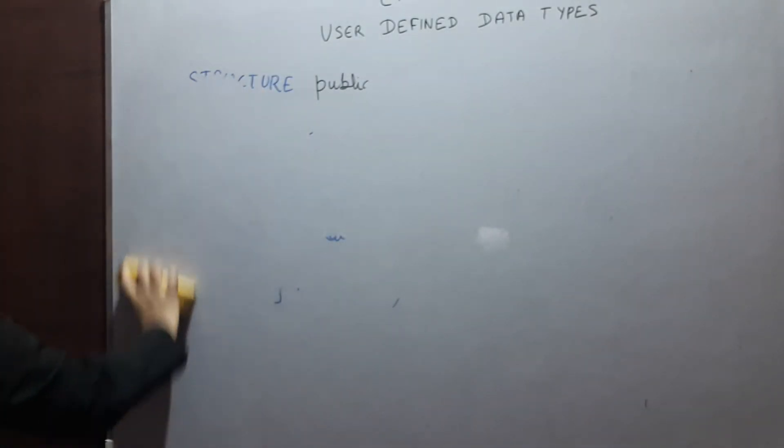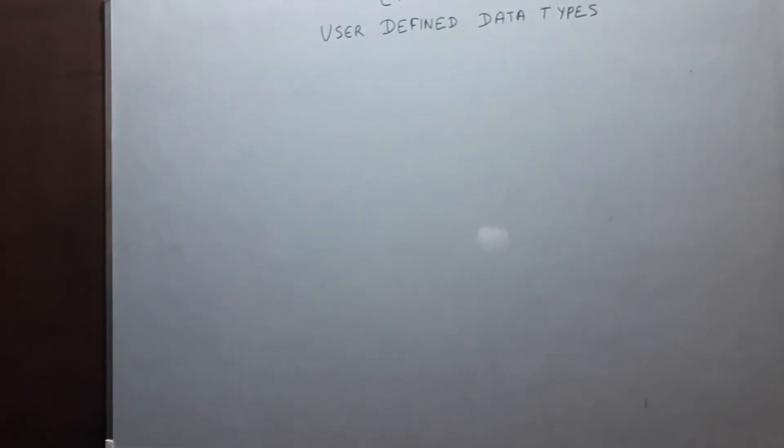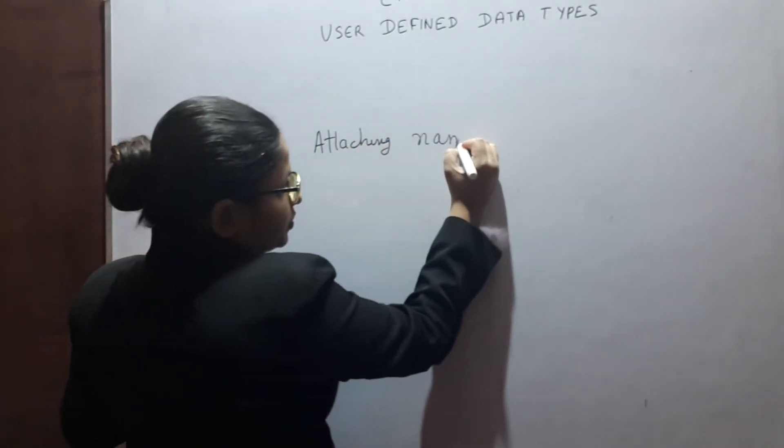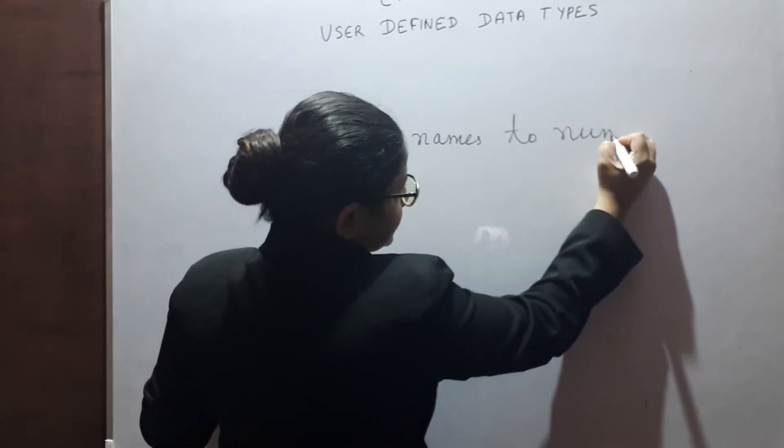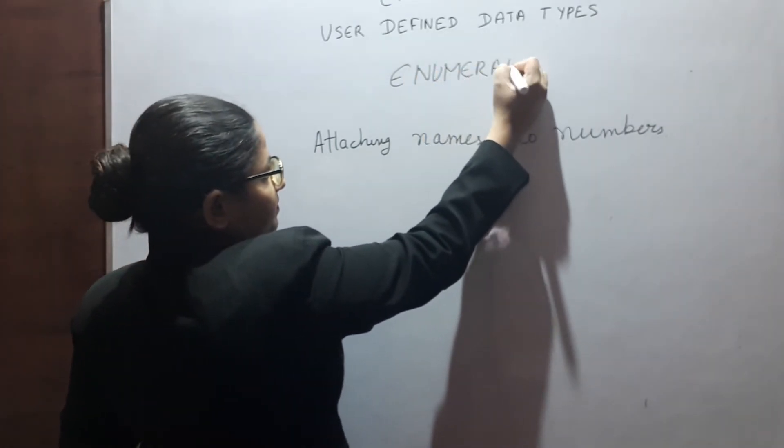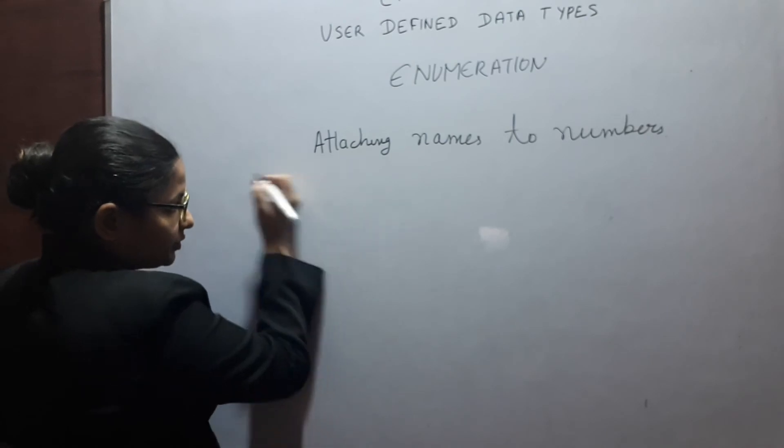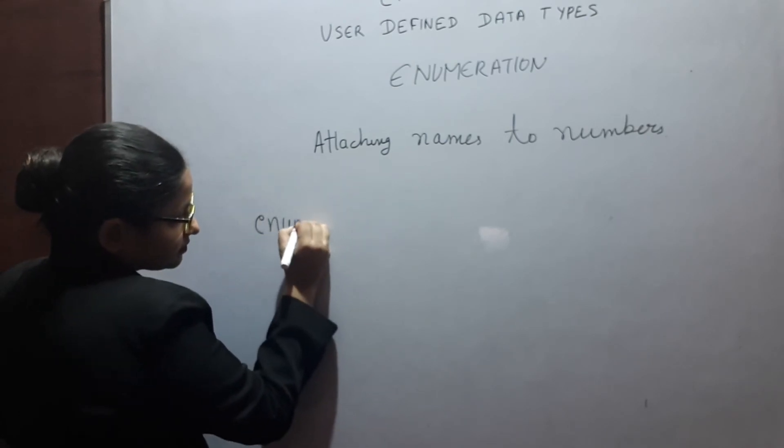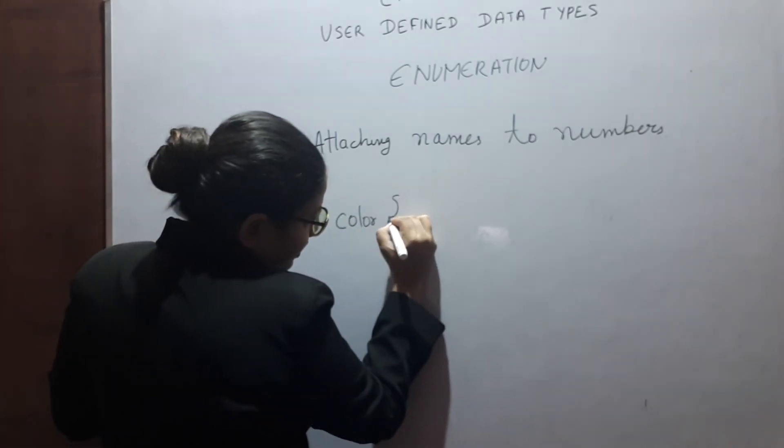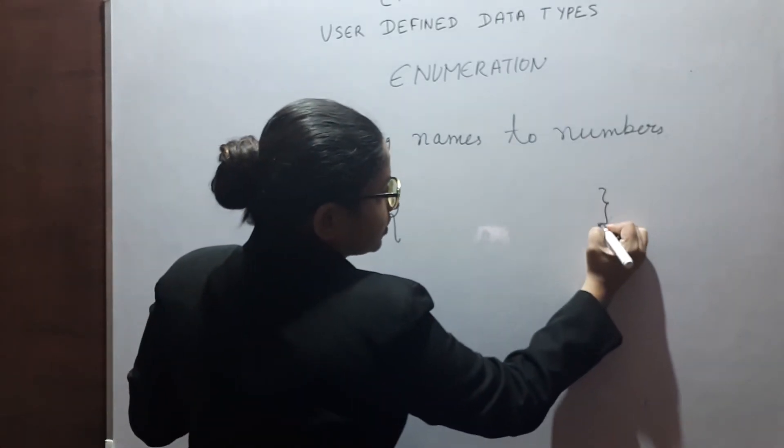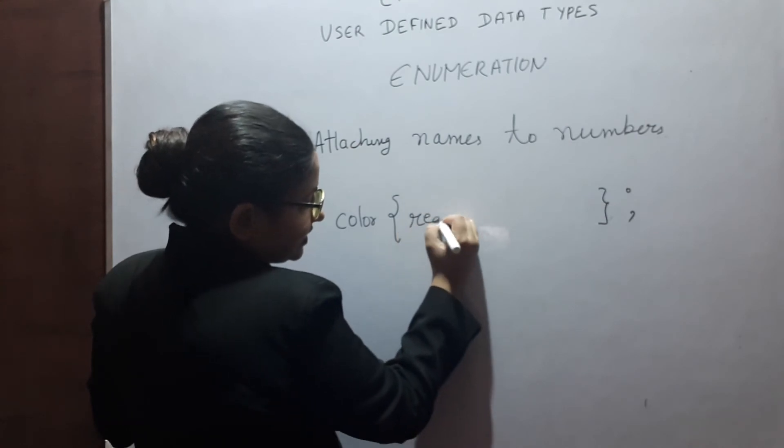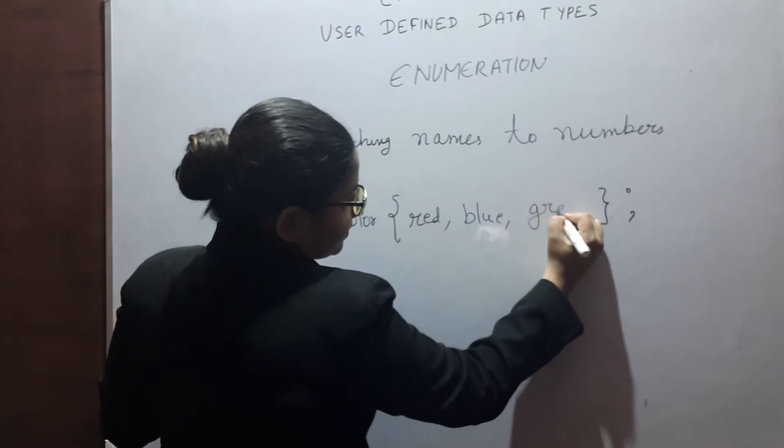Enumeration is attaching names to numbers. This is enumeration. You have the keyword enum. Enum name, for example, here I am taking color. Curly bracket opening, curly bracket closing and semicolon. In between, you are having different color names. For example, red, blue, green.